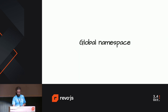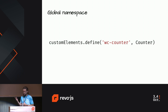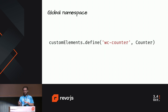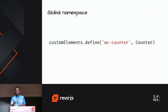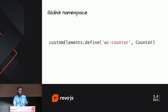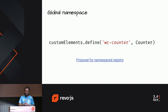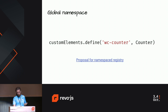First issue: global namespace. As we did in the live coding, you need to invoke customElements.define to register your element to the global registry. That might be an issue — if anyone else in the world defines a custom element with the same name as you did, your application will run into errors. Thankfully, there is a proposal for a namespace registry. There is no ETA, but at least we have a proposal.